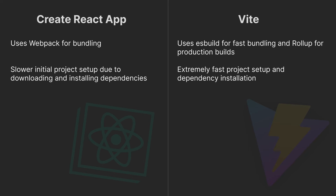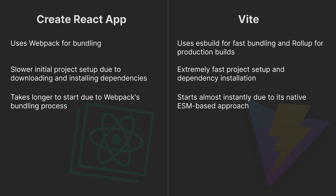Create React App offers slower initial project setup due to downloading and installing dependencies, while Vite offers extremely fast project setup and dependency installation. Create React App takes longer to start due to Webpack's bundling process, while Vite starts almost instantly due to its native ESM-based approach.